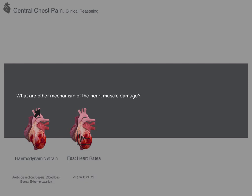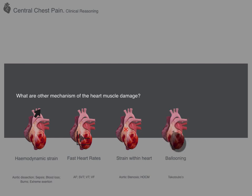Very fast heart rates and arrhythmias — such as fast AF, VT, or VF — can cause strain to the heart muscle and therefore troponin rise and chest pain. Strain within the heart, such as aortic stenosis or the obstruction seen in hypertrophic cardiomyopathy, can also lead to a troponin rise. Aortic stenosis is also known to be associated with chest pain. A condition called Takotsubo's cardiomyopathy — in which classically a stressful situation leads to ballooning of the apex of the heart — can cause both significant troponin rises and present with chest pain.